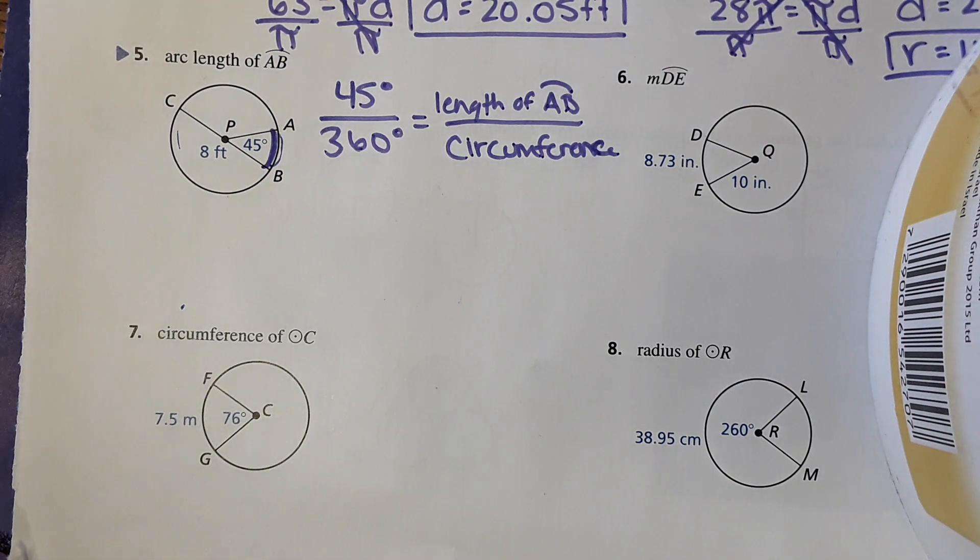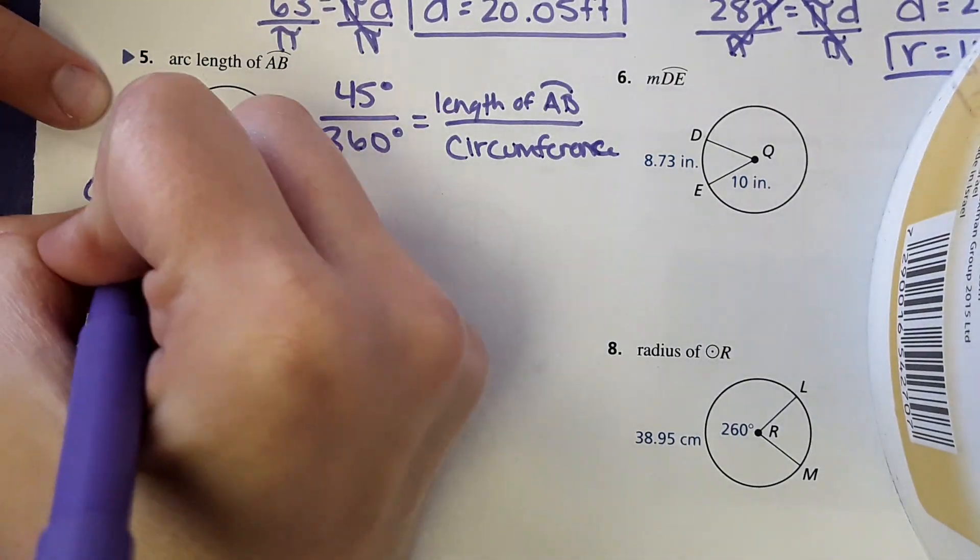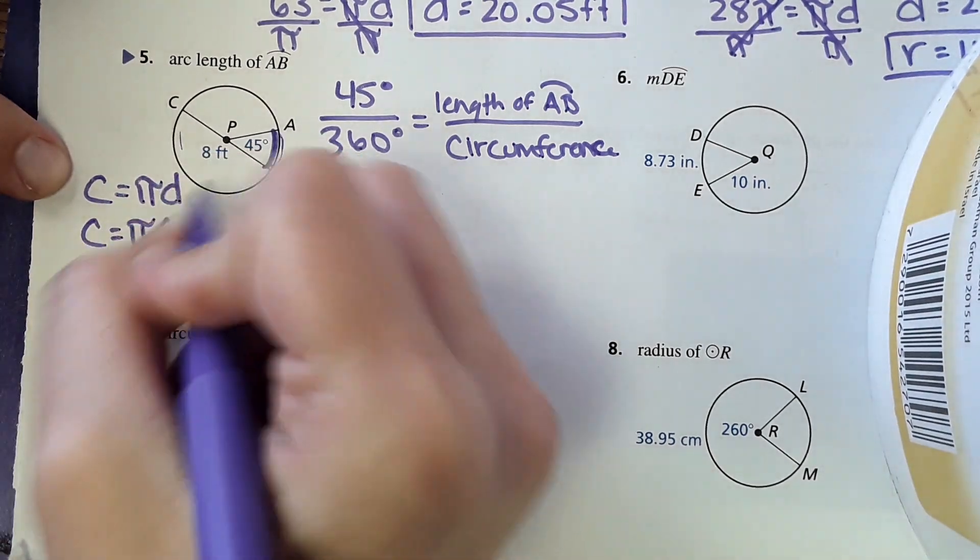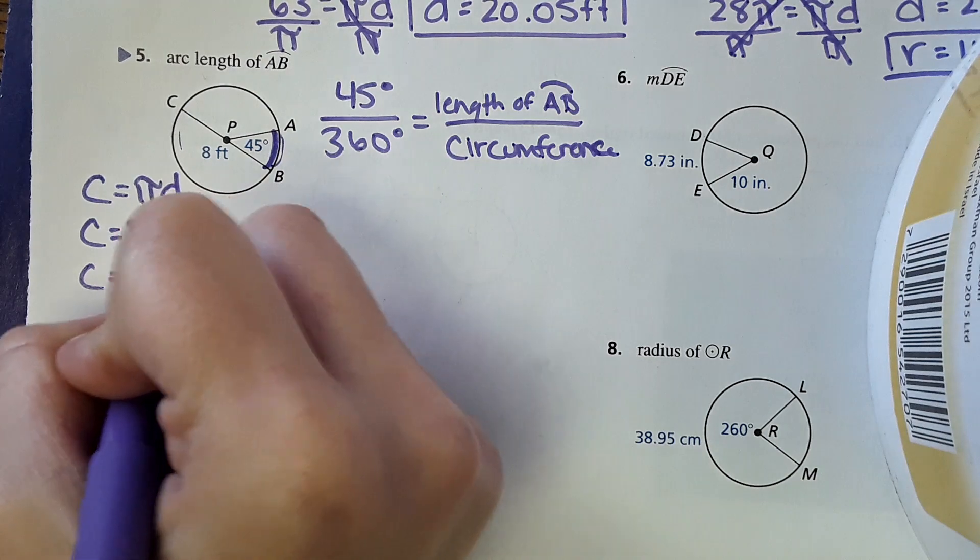So circumference we actually have to solve for though. They gave us diameter, but they didn't give us circumference. So over to the side, just circumference equals pi times diameter. So circumference equals pi times eight, which equals twenty-five point one three.